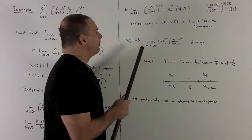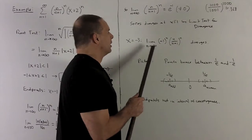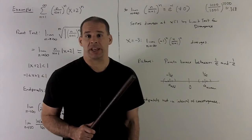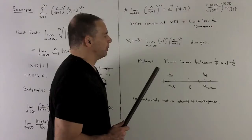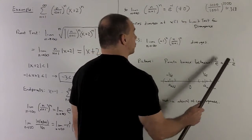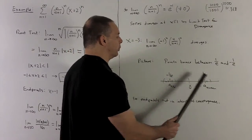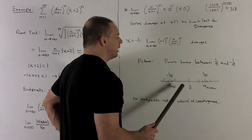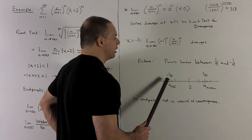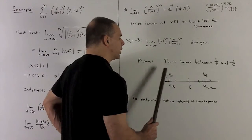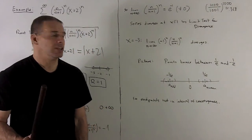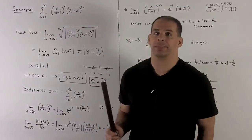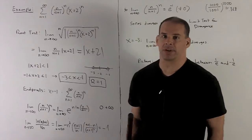At x = -3, the series also diverges by the limit test for divergence — it's not even going to go to a non-zero point; it's just going to oscillate. The points bounce between 1/e and -1/e: even terms congregate around 1/e, and odd terms congregate around -1/e, bouncing back and forth in a neighborhood of those values. There's no way it converges to a single point, so x = -3 is also not in our interval of convergence. Our final interval of convergence is (-3, -1), and our radius of convergence equals 1.